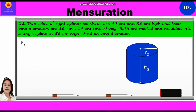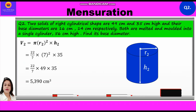Now we shall calculate the volume of the second cylinder. V2 equals pi R2 squared into H2. Substituting: 22 upon 7 into 7 squared into 35, which equals 22 upon 7 into 49 into 35, which equals 5,390 cm³. Volume of the second cylinder is 5,390 cm³.